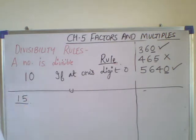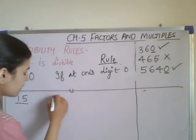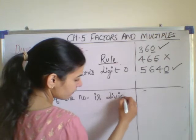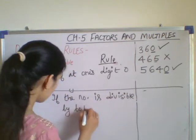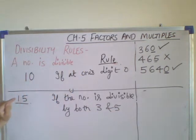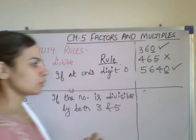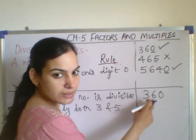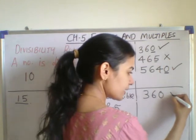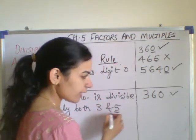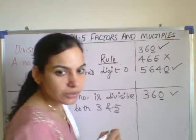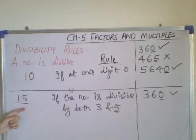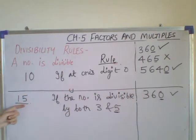The next is divisibility by 15. If the number is divisible by both 3 and 5, then the number will be divisible by 15 also. For 360: it was divisible by 3 because 3 plus 6 equals 9, and divisible by 5 because 0 is at the one's place. Since 360 is divisible by both 3 and 5, it is also divisible by 15.